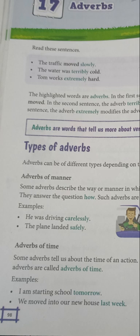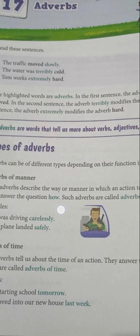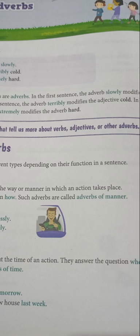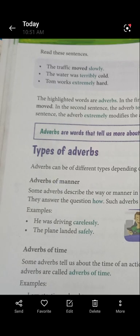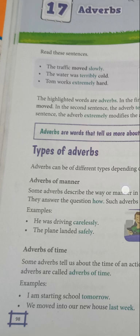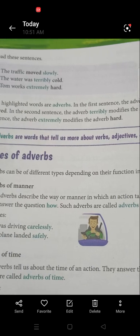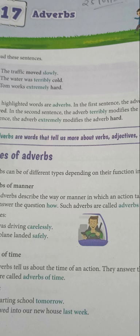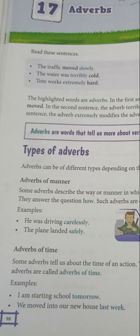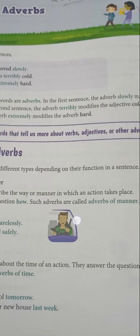The first type is adverbs of manner. Some adverbs describe the way or manner in which an action takes place — kaise ho raha hai, achhe se, bure tarike se, saaf sutre tarike se. They answer the question 'how?' Such adverbs are called adverbs of manner.